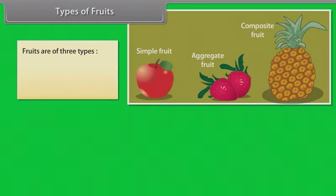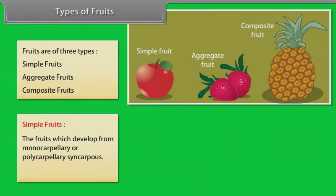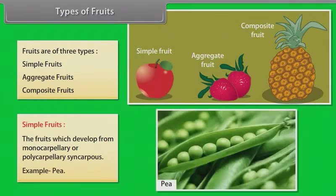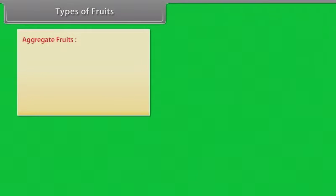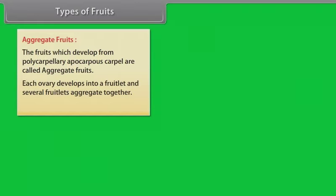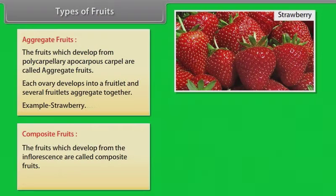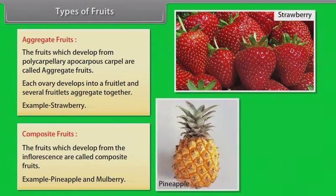Fruits are of three types: simple fruits, aggregate fruits, and composite fruits. Simple fruits develop from monocarpellary or polycarpellary syncarpous ovaries. Aggregate fruits develop from polycarpellary apocarpous carpels; each ovary develops into a fruitlet and several fruitlets aggregate together — example: strawberry. Composite fruits develop from the inflorescence — example: pineapple and mulberry.